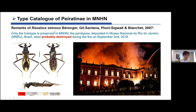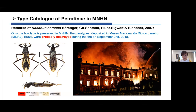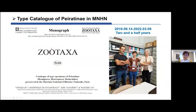The curator in Paris museum, Dr. Dominique, added a sentence in the remarks of the species Arasa has settles us: 'Only the holotype is preserved in Paris; the paratypes preserved in the Brazil museum were probably destroyed during the fire on September 2nd, 2018.' I was very sad to read this. The fire was an accident we could not predict, so what we should do now is record and protect specimens as much and as soon as possible. I went to Paris in September 2019 and this catalog was published in 2022.